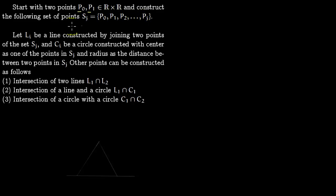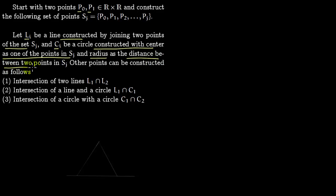The way to construct these points is via lines and circles. A line is constructed by joining two points of the set Sj — you pick any two points and join them with a straight edge. To draw a circle, you construct it with center as one of the points in Sj, from P0 to Pj, make that the center, and the radius as the distance between two points in Sj.